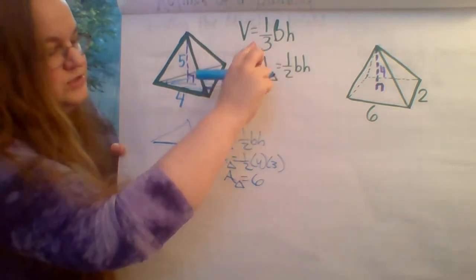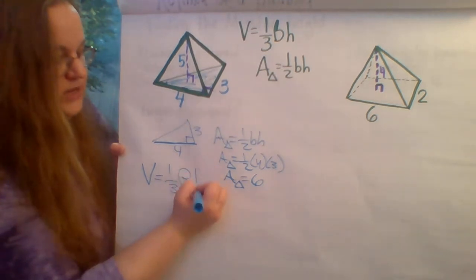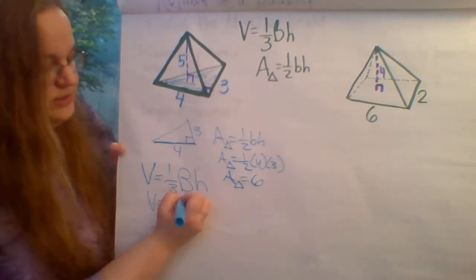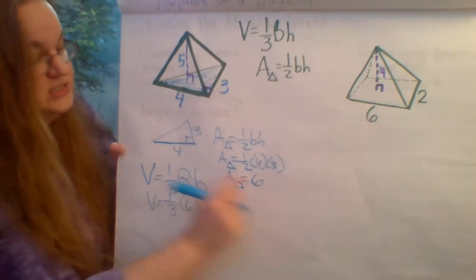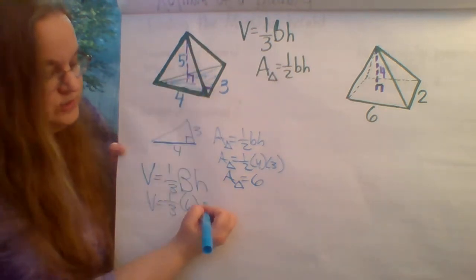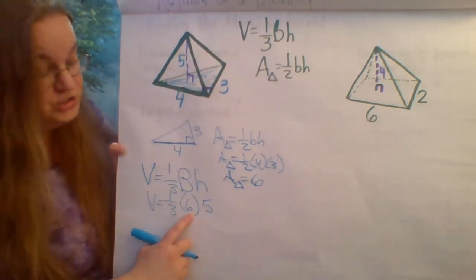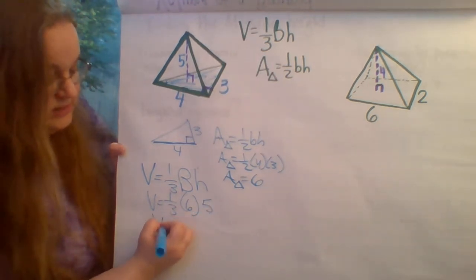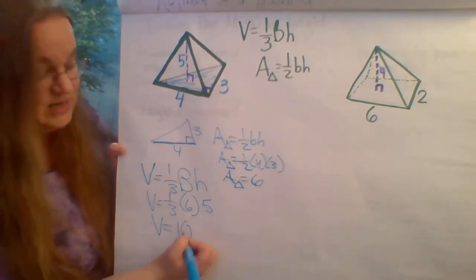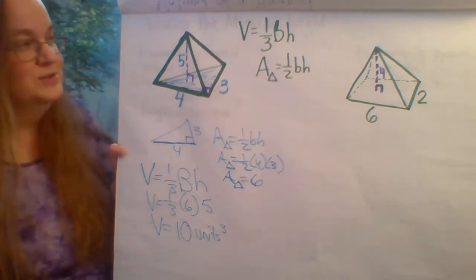One-half times 4 times 3: half of 4 is 2, times 3 is 6. So the area of the base is 6. Now using the volume formula: volume equals one-third times the area of the base times the height. So volume equals one-third times 6 times the height, which is 5. One-third of 6 is 2, times 5 is 10. So the volume of this pyramid is 10 units cubed.